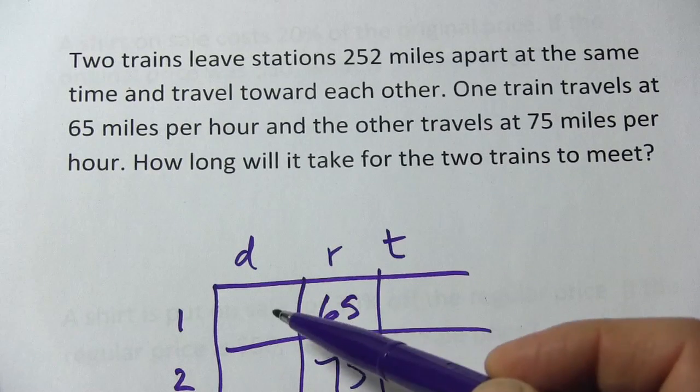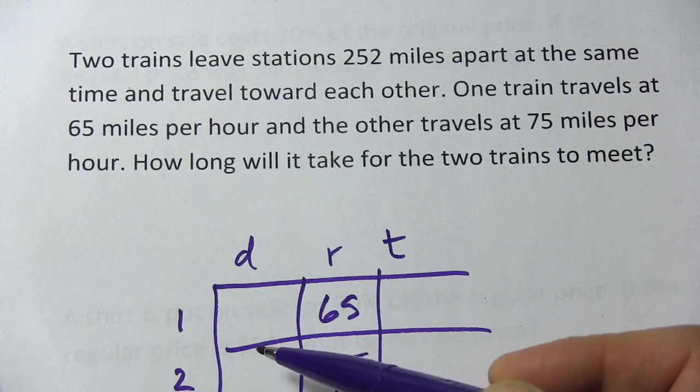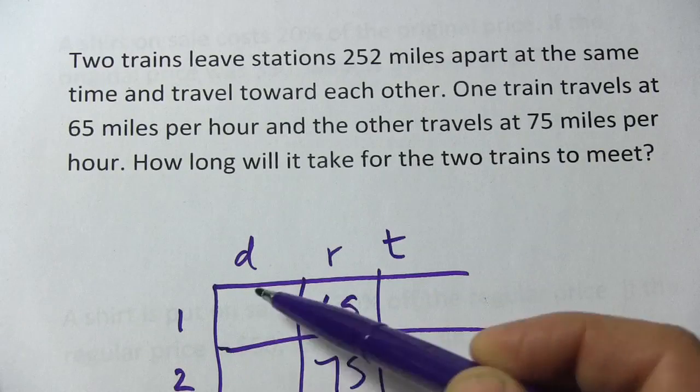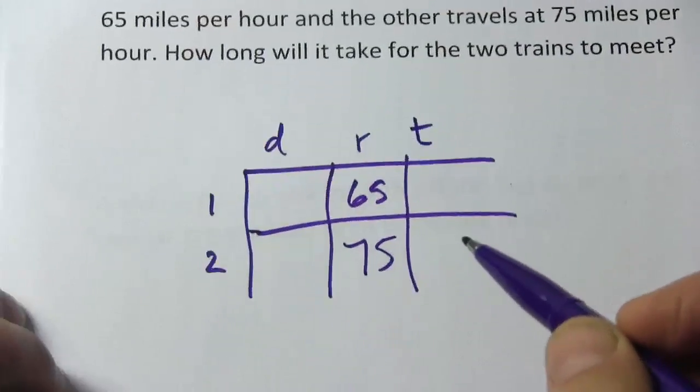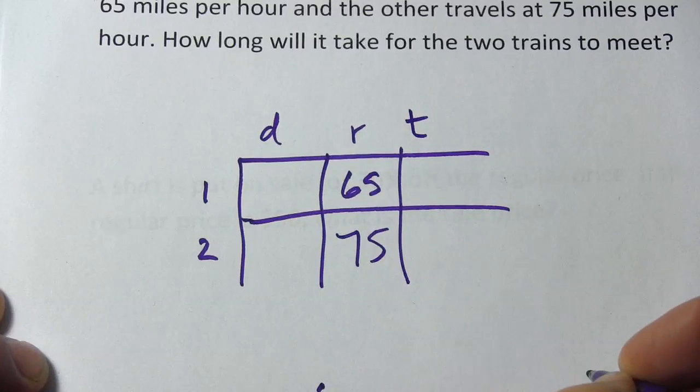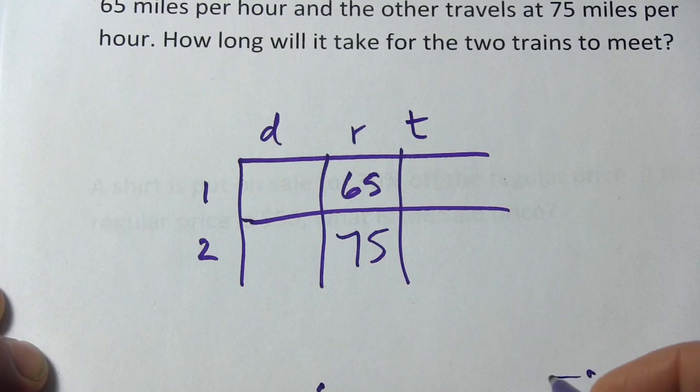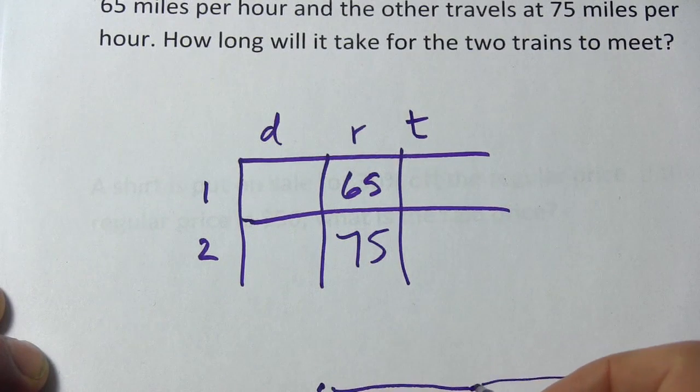The total distance is 252, but I don't know how far each of them is going to travel during that time. I'm going to come back to that. Let's think about the time for a minute. If you've got two trains and one leaves over here and one leaves over here at the same time, they're going to meet somewhere in the middle.